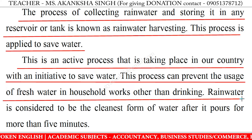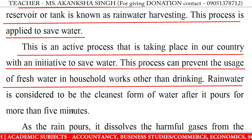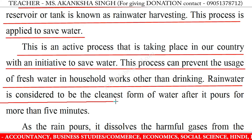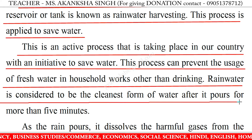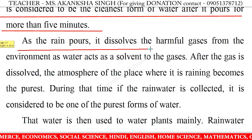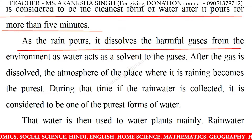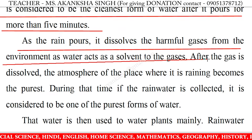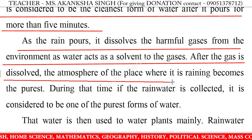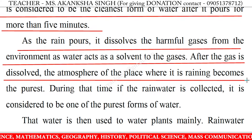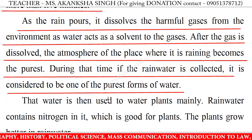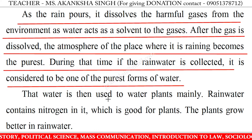This process can prevent the usage of fresh water in household works other than drinking. Rainwater is considered to be the cleanest form of water after it pours for more than 5 minutes. As the rain pours, it dissolves the harmful gases from the environment, as water acts as a solvent to the gases. After the gas is dissolved, the atmosphere of the place where it is raining becomes the purest. During that time, if the rainwater is collected, it is considered to be one of the purest forms of water.